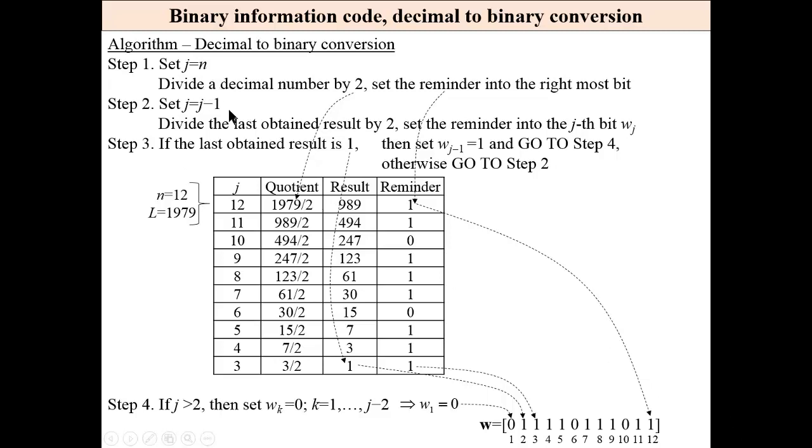If we have a number L and we want to convert this decimal number to a binary word of length n, then in step one, set j equal 1 and divide the decimal number by 2. Set the remainder into the rightmost bit.